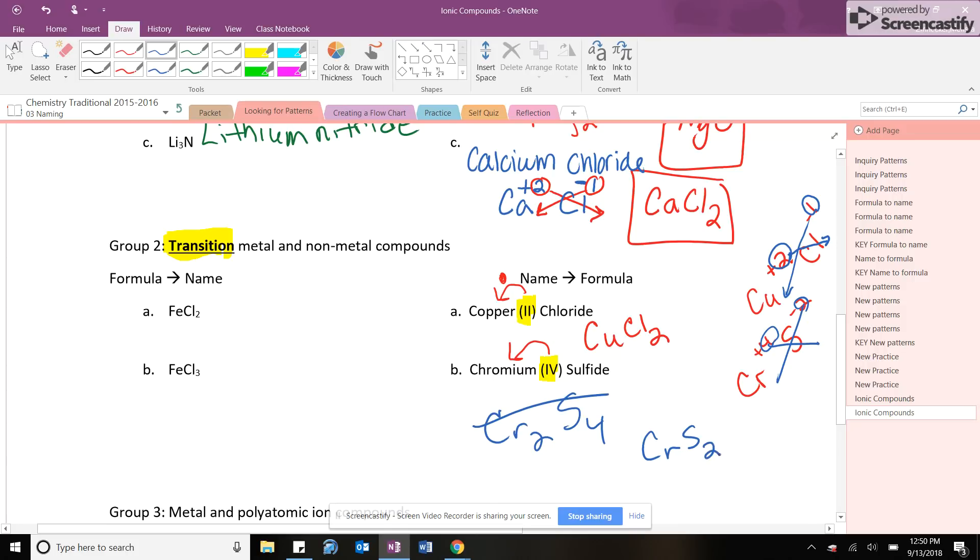CrS2. Okay. See how when I double checked those charges, I caught that mistake. I did that on purpose. Anyway, so two minus two is give me a minus four. One plus four gives me a plus four. Done. Okay. Easy. All right. There we go.